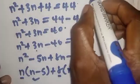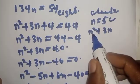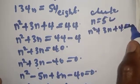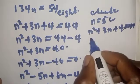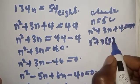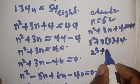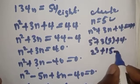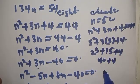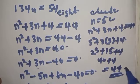Let's check to confirm our answer. With n equal to 5: we have n squared plus 3n plus 4 equals 5 squared plus 3 times 5 plus 4, which is 25 plus 15 plus 4 equals 44. You can see that our answer is correct at n equal to 5.